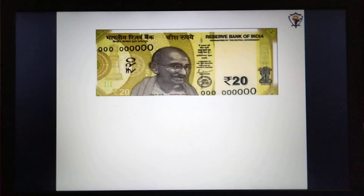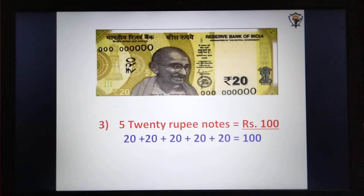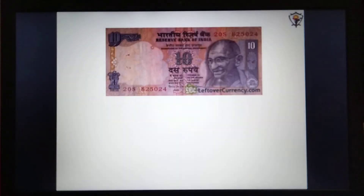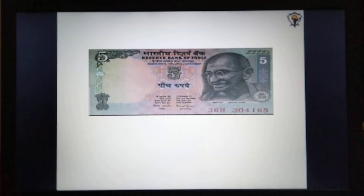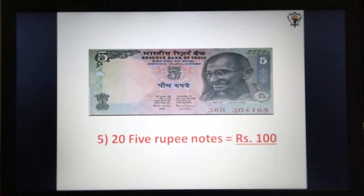How many twenty rupee notes make hundred rupees? Five twenty rupee notes make hundred rupees. How many ten rupee notes make hundred rupees? Ten ten rupee notes make hundred rupees — ten tens are hundred. How many five rupee notes make hundred rupees? Twenty five rupee notes make hundred rupees.